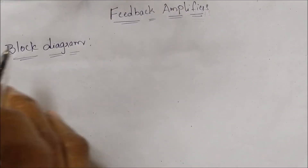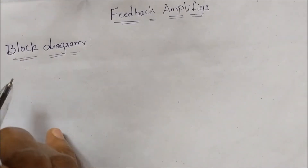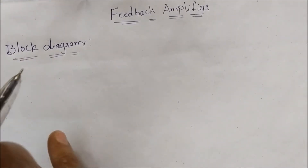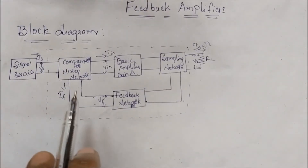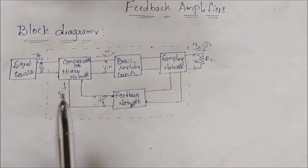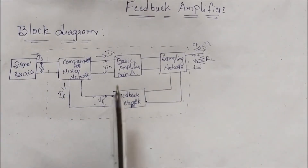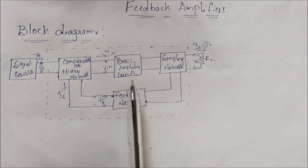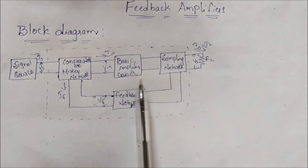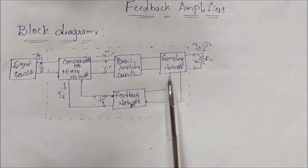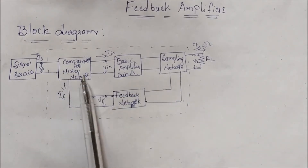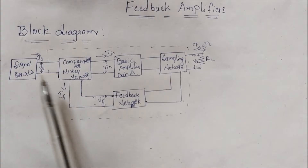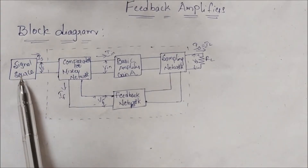I will show you the block diagram of the feedback amplifier. The block diagram includes the basic amplifier, sampling network, feedback network, and comparator or mixer network.